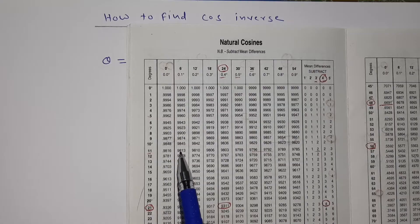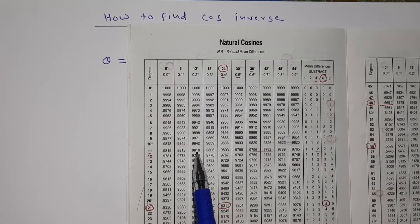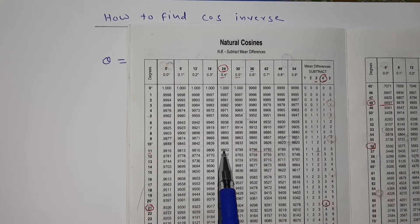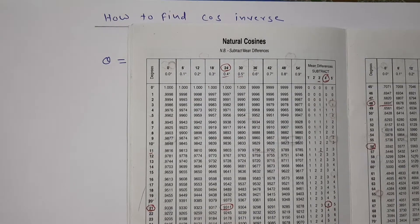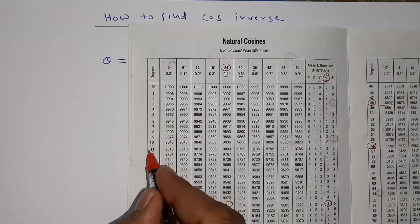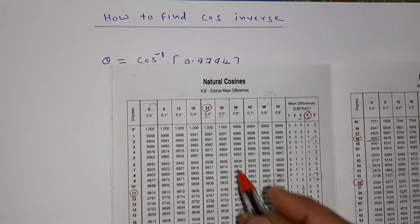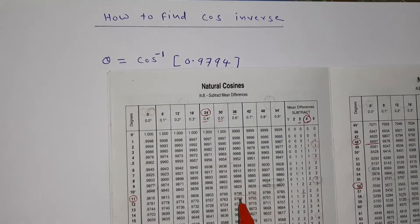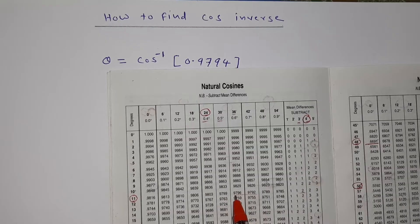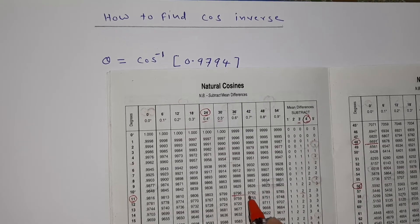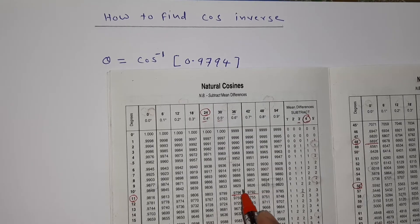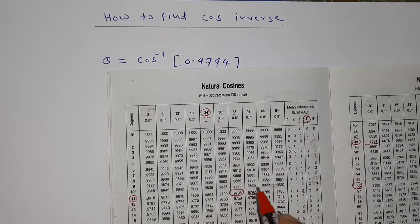So I'll see in 11 degrees: 9816, 9813, 9810, 9806, 9803, 9799, 9796. If I see here, in 11 degrees I reach near to 9794, that is 9796 and 9792.